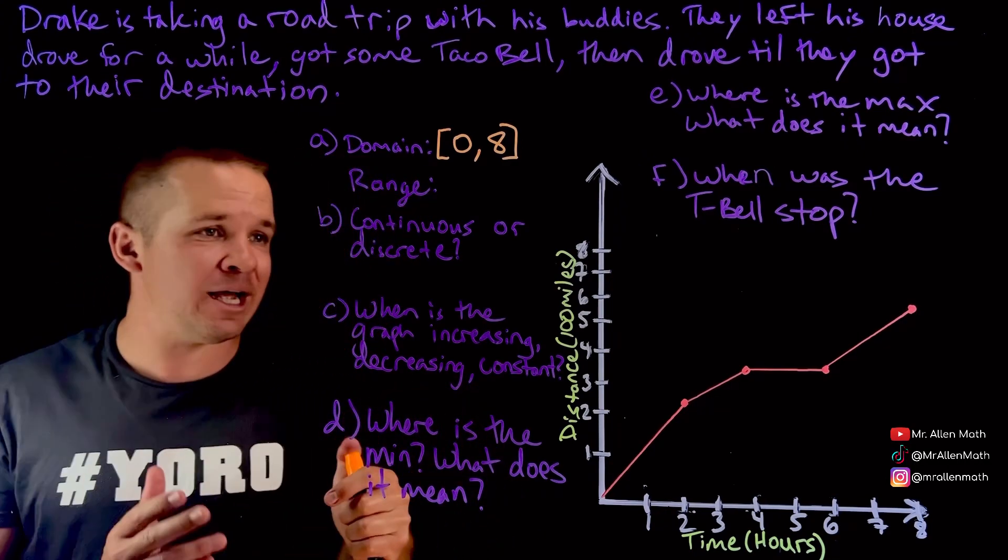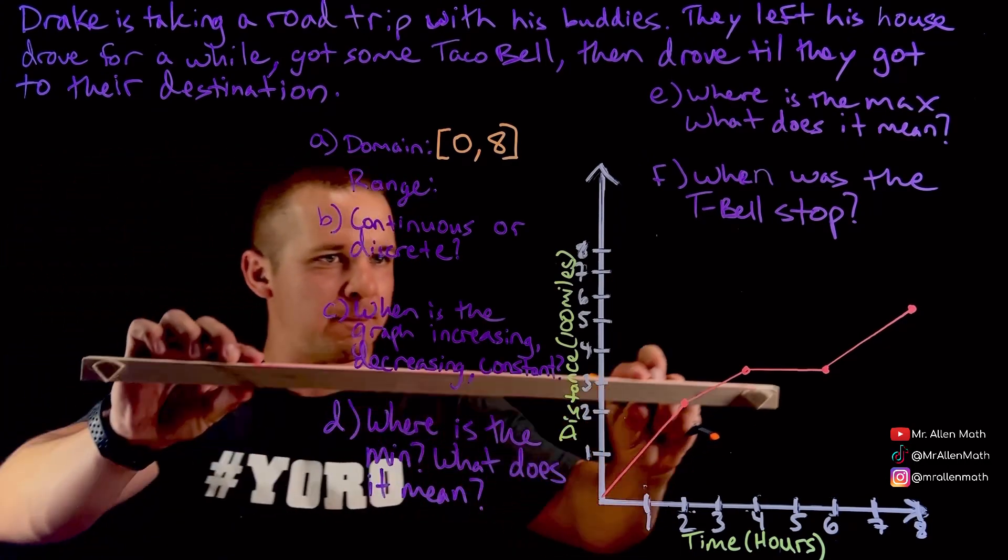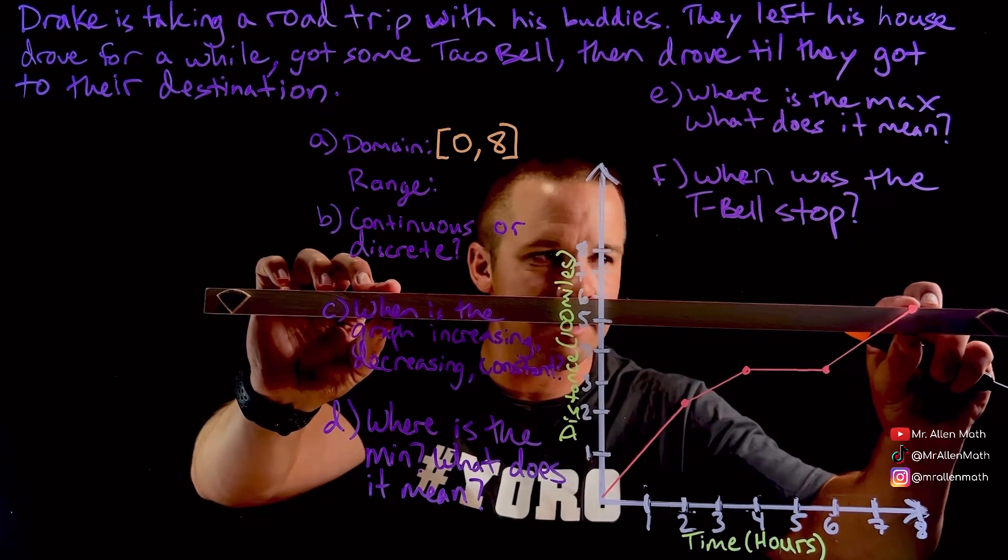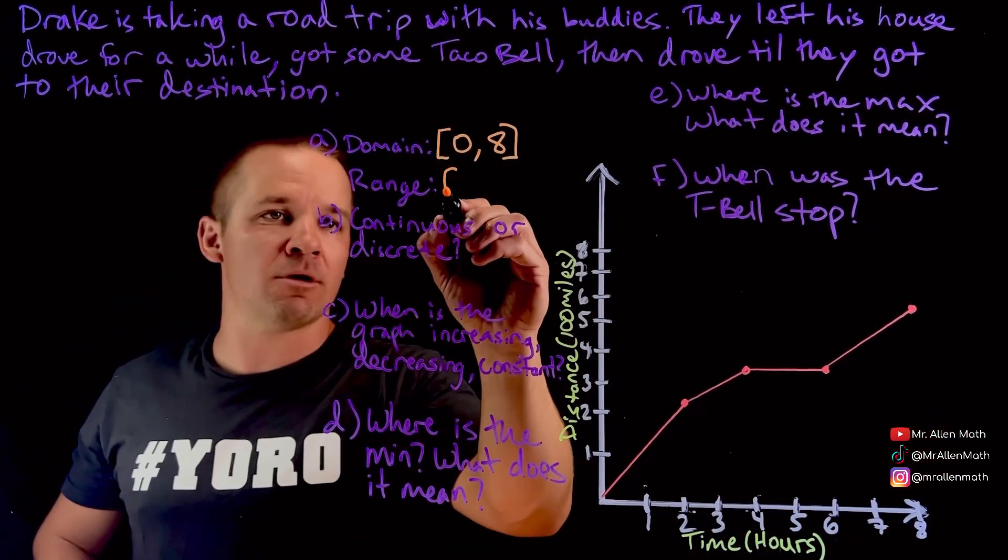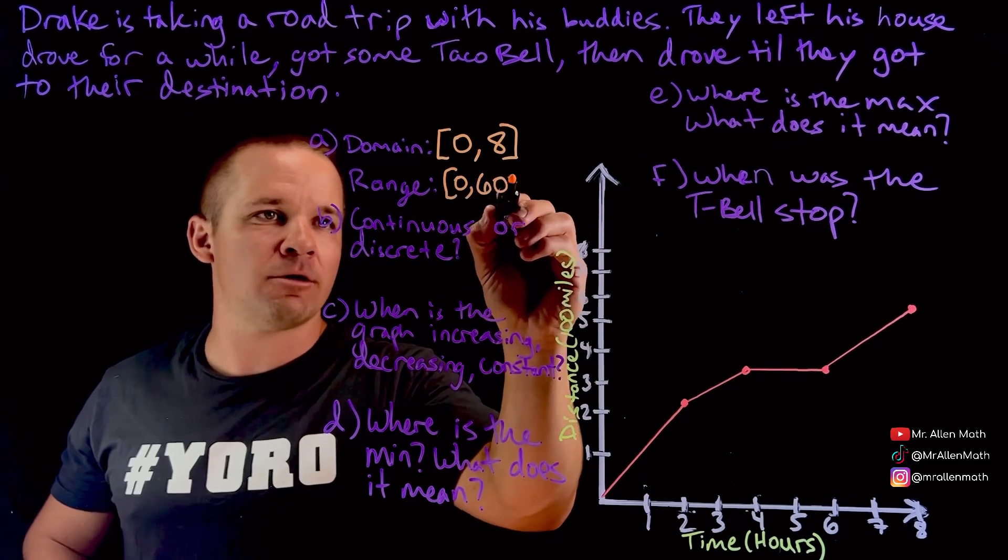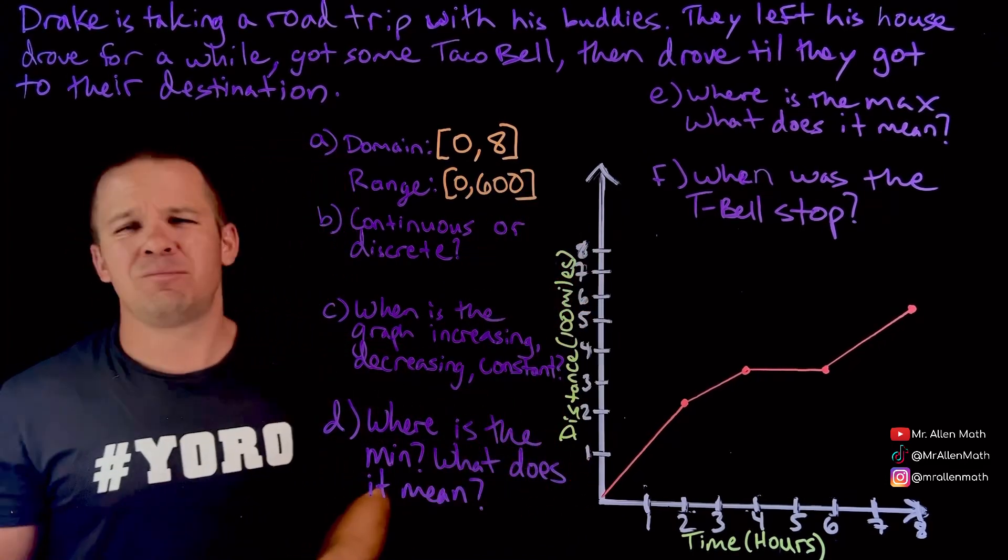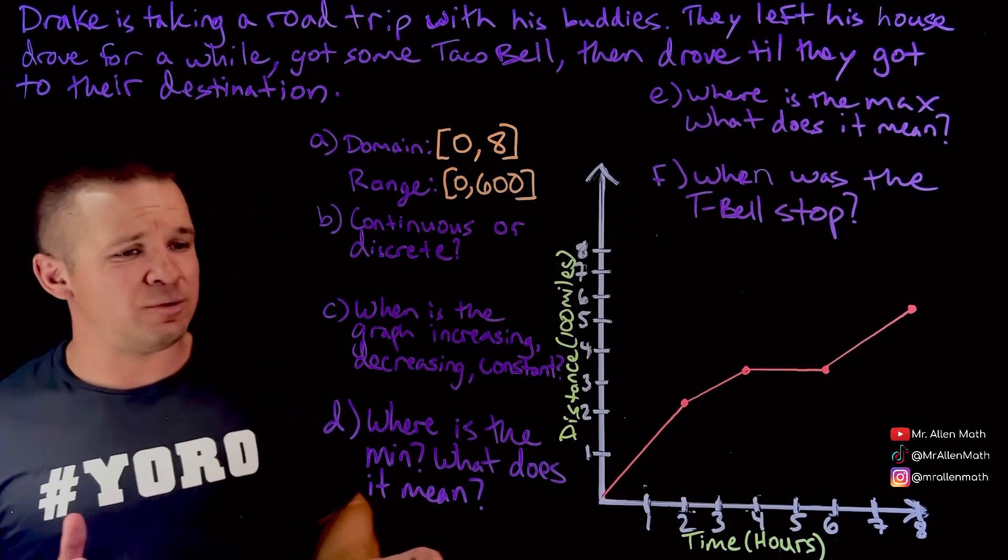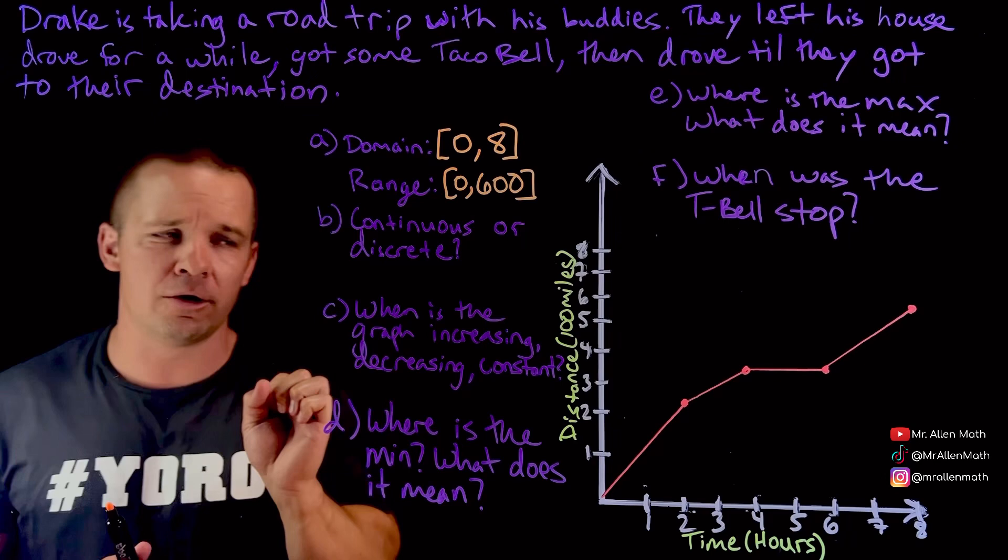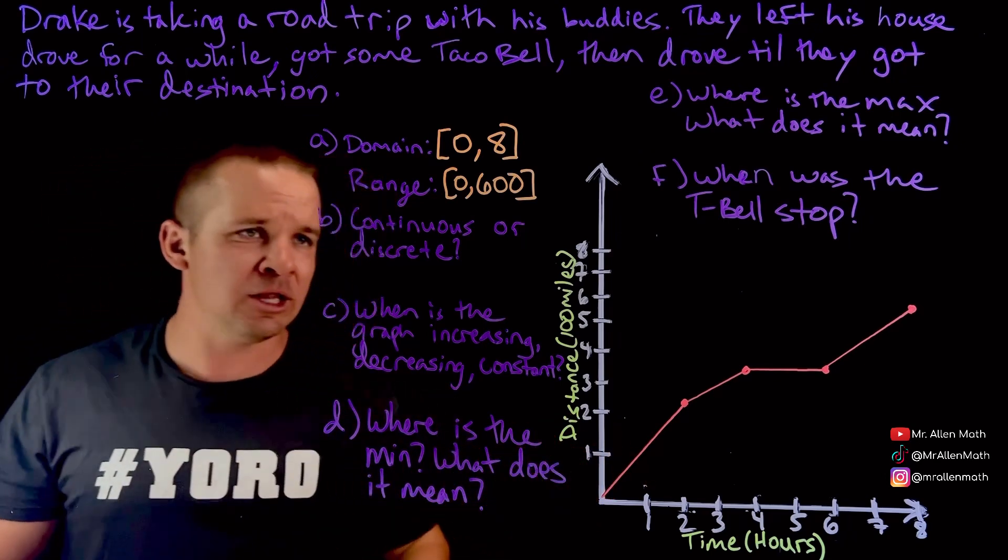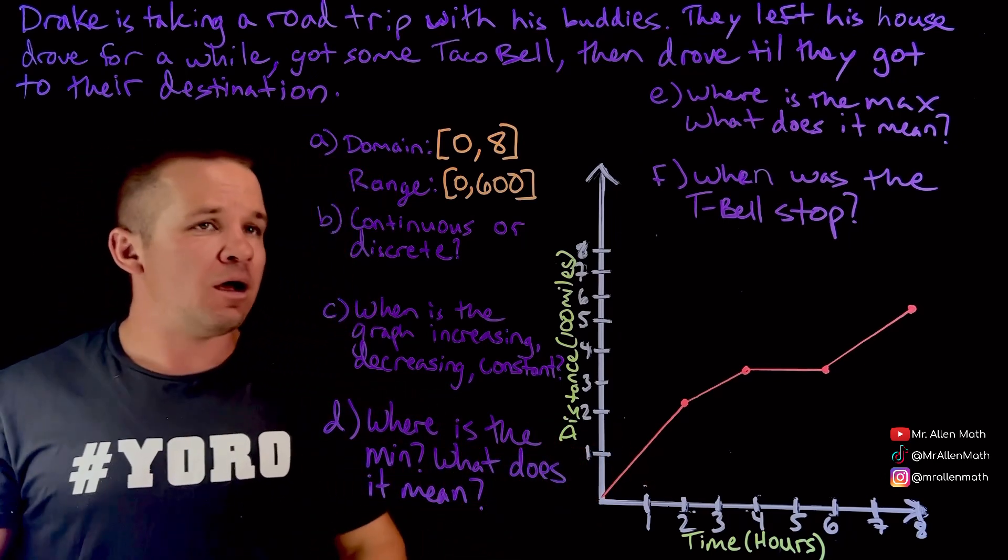And then our range, a little hard to tell here, but let me pop my straight edge up. Looks like it's in about six, right? So they're about 600 miles. So from zero to 600 miles. Nice, beautiful, fantastic. Okay, so we've got our domain and range. Now, I did use brackets here because we are including those points. Notice the closed circles, right? Lovely, excellent, fantastic.